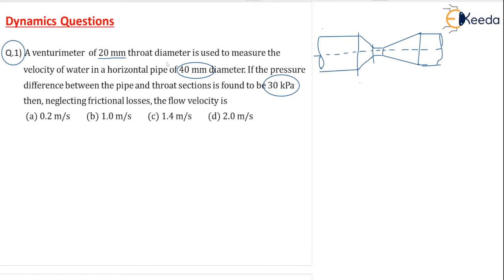How can we represent the data on the venturi meter? A venturi meter of 20 mm throat diameter - so I will take two sections, section 1 here and section 2 here. As per the given question, 20 mm throat diameter, that is your D2. D2 equal to 20 mm.